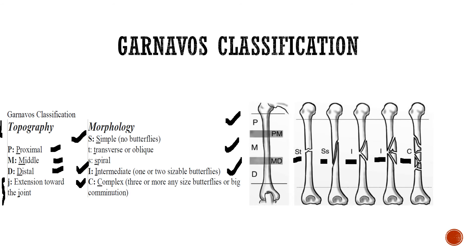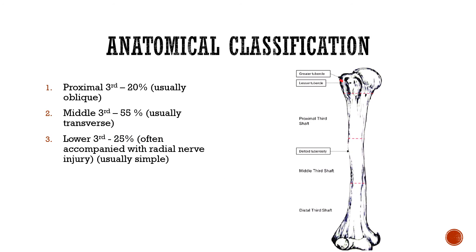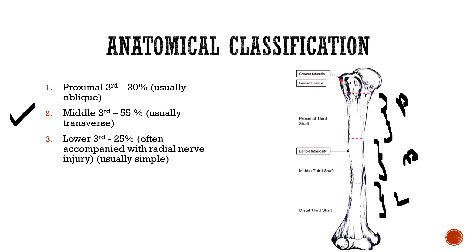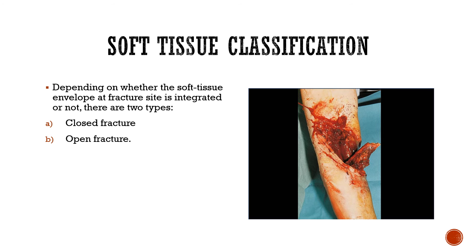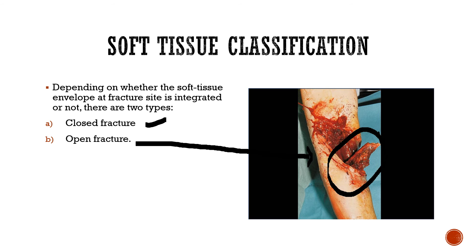The anatomical classification divides the shaft into proximal, middle, and distal thirds. The most common location is the middle third; the least common is the proximal third. Radial nerve injury is more common in the distal third. Regarding soft tissue classification: if the soft tissue is intact it is a closed fracture; if the bone protrudes or soft tissue is disrupted it is an open (compound) fracture.